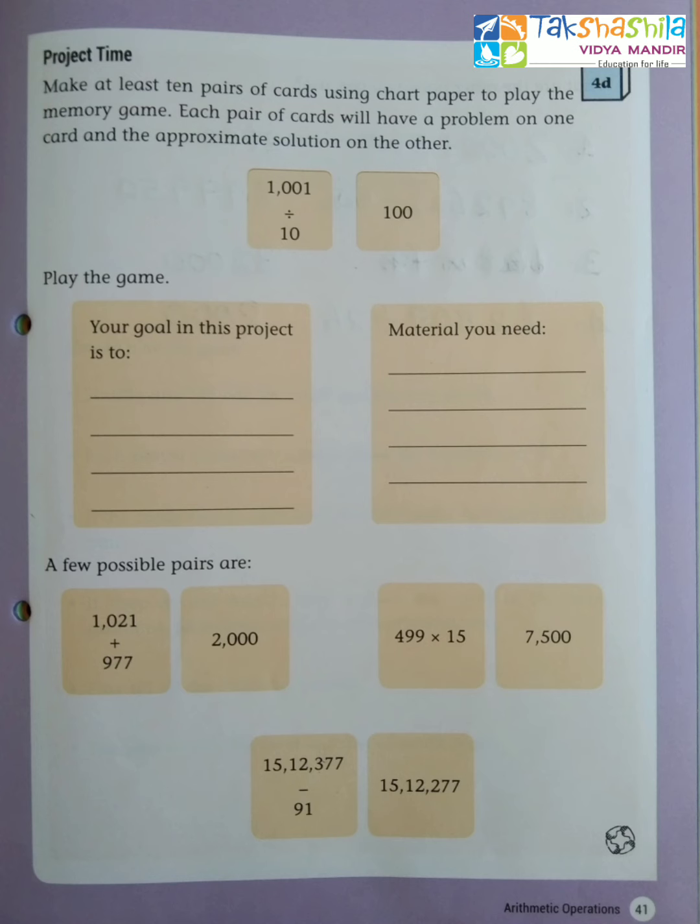If you are finding the approximate value for 1001, the answer is 1000. If you are approximating 10, the answer is 10. So 1000 divided by 10, the answer is 100. The solution for this approximate value is given on the other card. Like this, you have to prepare some pairs of cards.